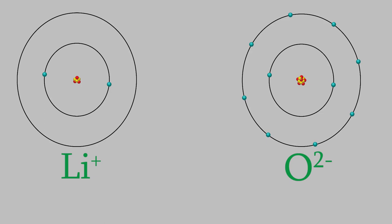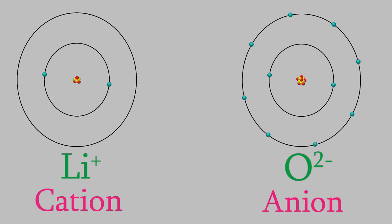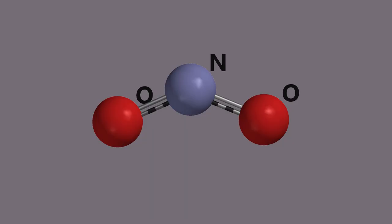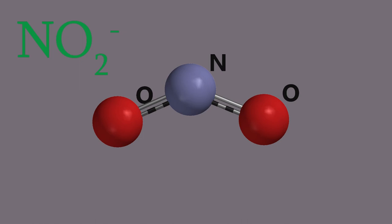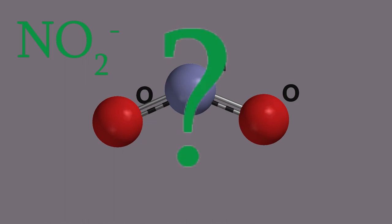Positively charged ions like this lithium atom are called cations, and negatively charged ions are called anions. We can also make cations and anions out of molecules. For example, here's a molecule of nitrogen dioxide. Nitrogen has 7 electrons and each oxygen has 8, so there are a total of 23 electrons. If we add an electron, we'll have a nitrogen dioxide anion with a charge of minus 1. The electrons are shared between all the atoms in an ion, so the electron we added isn't on any one particular atom. If we had taken away an electron instead, we'd have a nitrogen dioxide cation with a charge of positive 1. When we make ions like these which have more than one atom in them, they're called polyatomic ions.